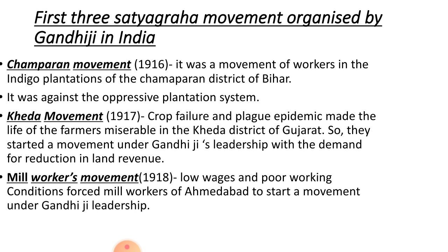His first Satyagraha was the Champaran movement. A district in the north-western part of Bihar suffered under European indigo planters. The Europeans practised all kinds of oppression against the weak peasants. Peasants were forced to grow indigo on at least one-third of their land. Gandhiji, along with Dr. Rajendra Prasad, started a campaign or Satyagraha — a non-violent, non-cooperation protest against the unjust planters.